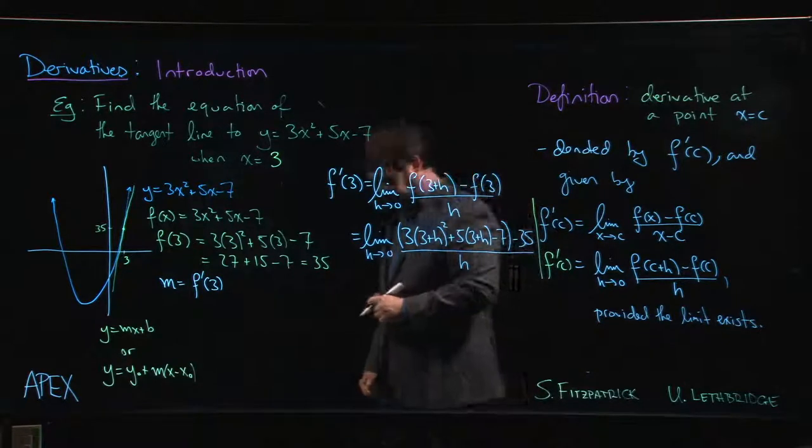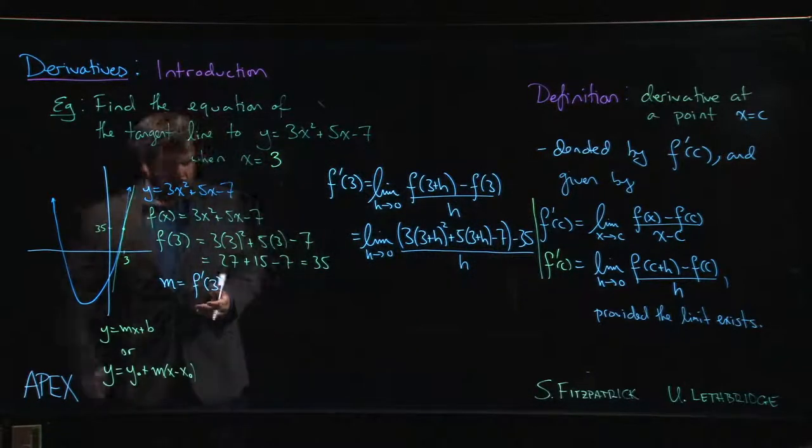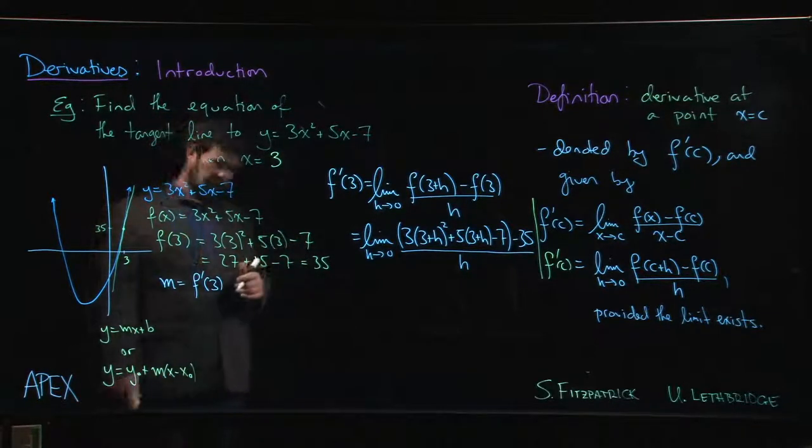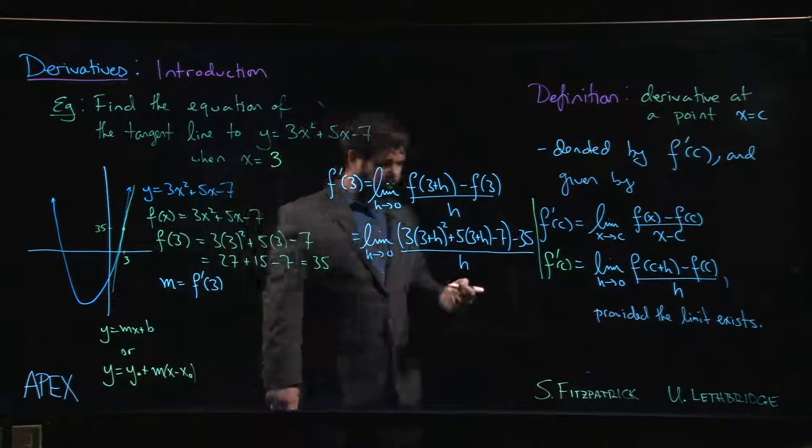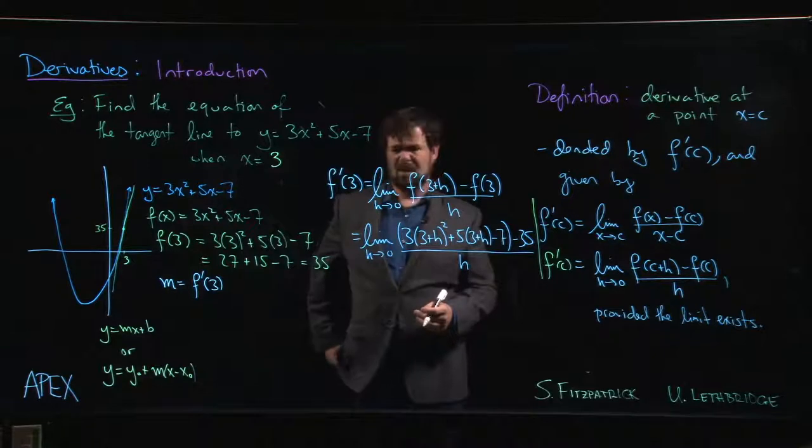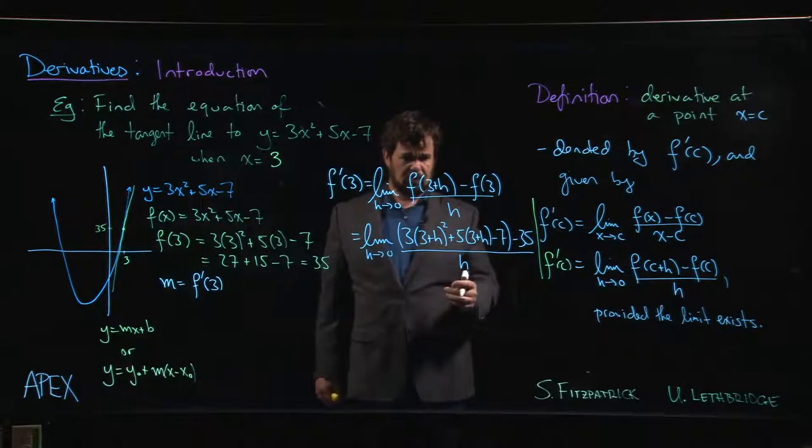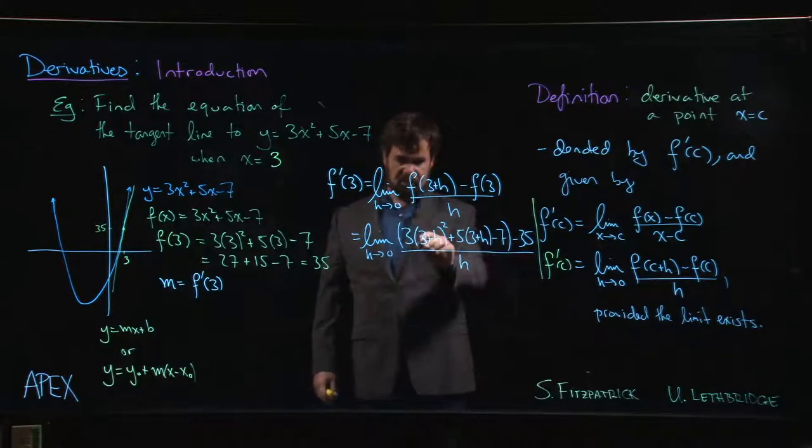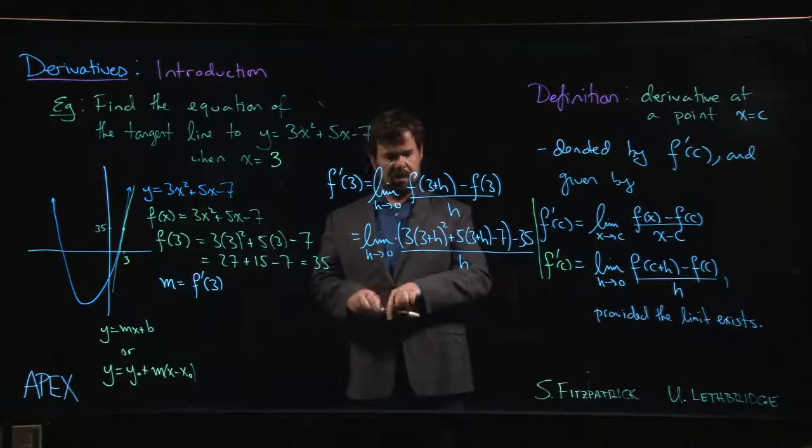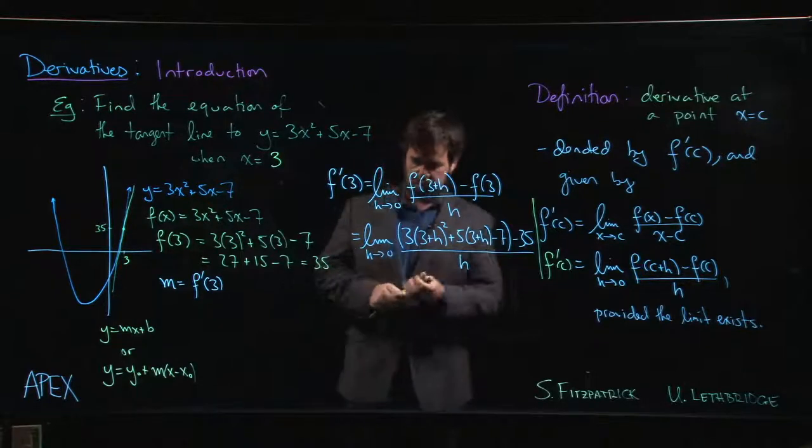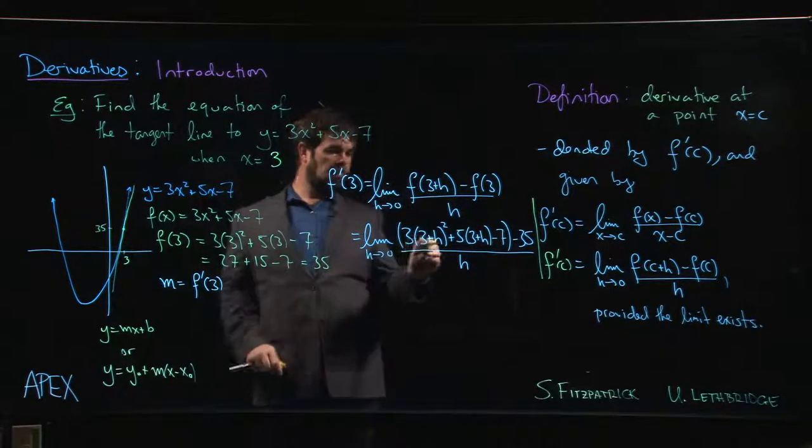So for this type of problem there's a bit of a trade-off depending on the type of algebra that you're comfortable with. In the last one we ended up having to do a bit of factoring, right? There's a quadratic we had to factor. That's okay, we know how to factor quadratics, it wasn't so bad. Here we have to expand, right, because we have this square. We have to square a binomial, we have to multiply the 5 through, and so things get maybe a little bit messy. Again, maybe we do a bit of scratch work so we don't have to do too many steps with limits.